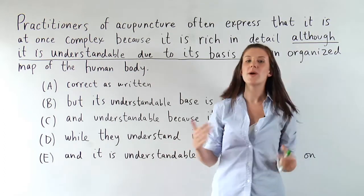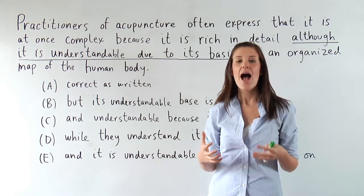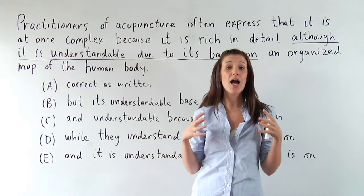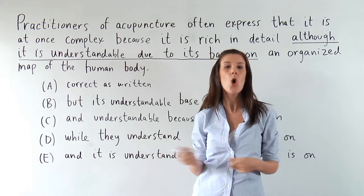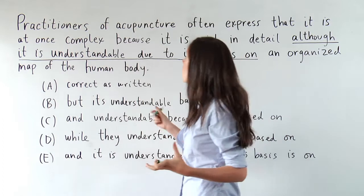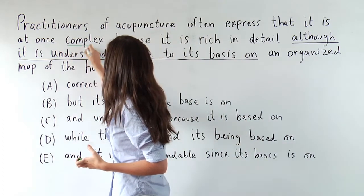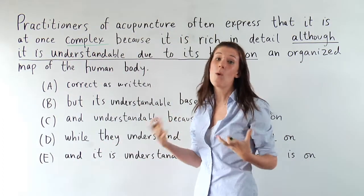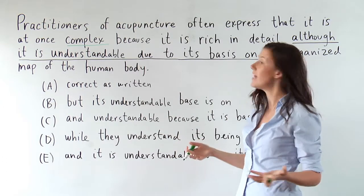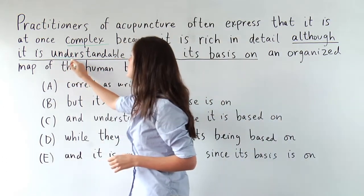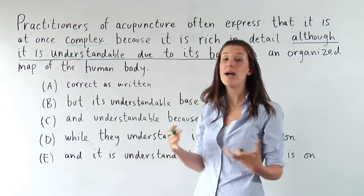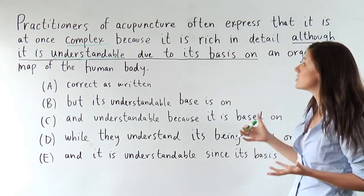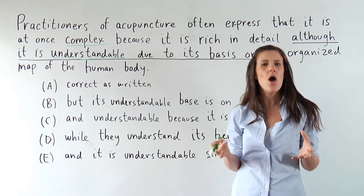So I can see that we're describing acupuncture here, and we're describing acupuncture as having a couple of different qualities. What do we say about acupuncture? Well, we say it's complex, and then we give a reason why it's complex, because it's rich in detail. And then we say it's understandable, and we give a reason why it's understandable. It's based on an organized map of the human body.